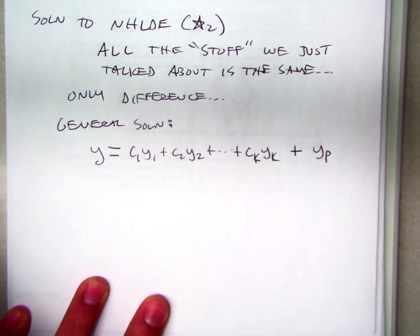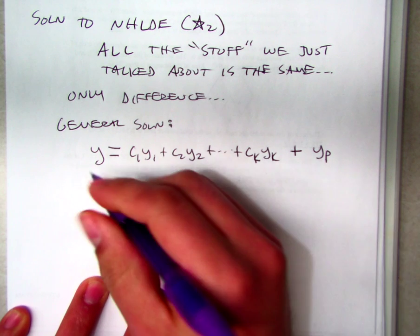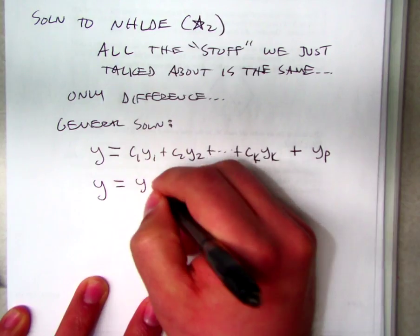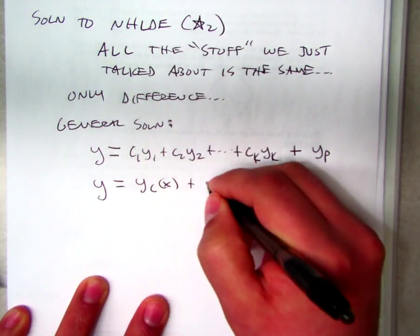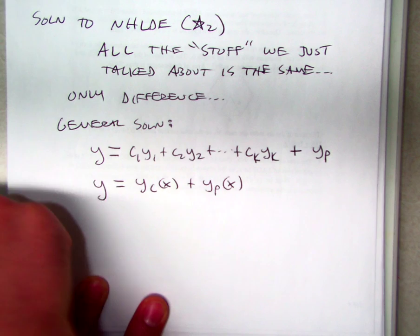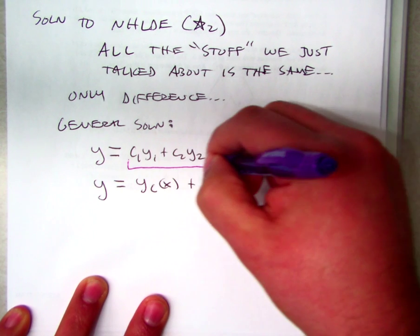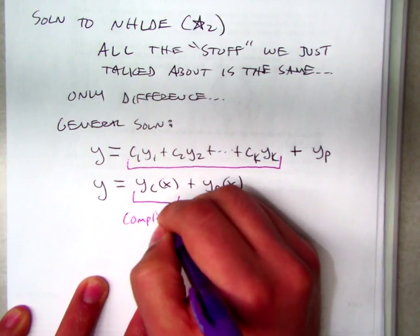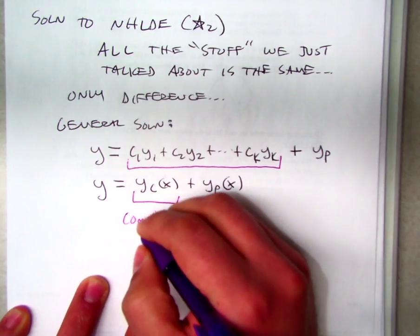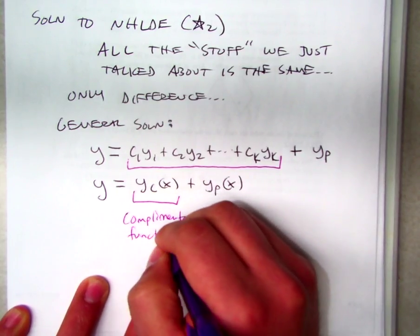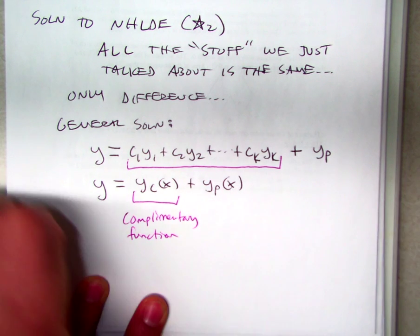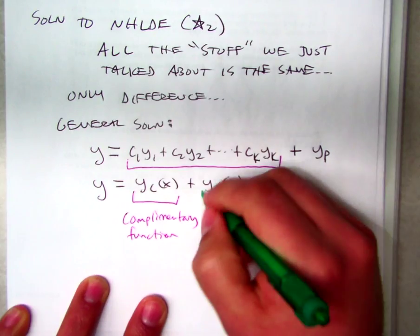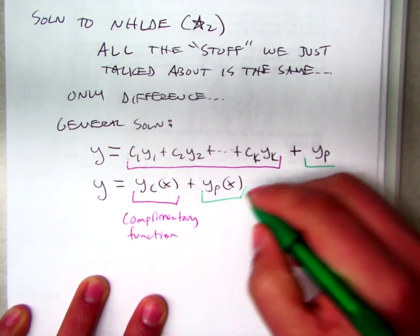We do have a condensed notation for this. Sometimes we call this YC of X plus YP of X. This is referring to the complementary function. That's what we call it. Complementary function or solution.